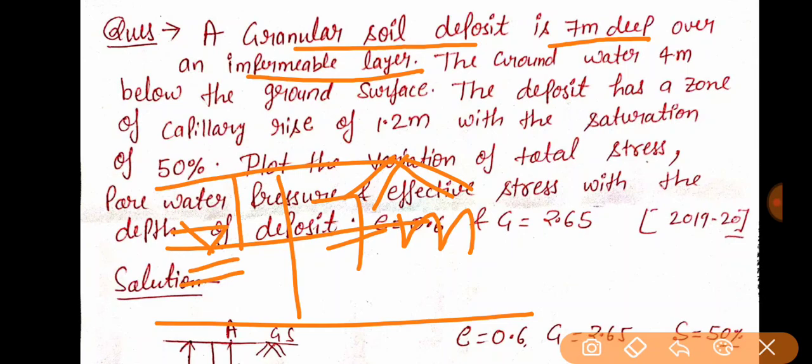Now, here is the question. This statement that I am going to say is very very important. Deposit has a zone of capillary rise of 1.2 meters. It is 1.2 meters capillary rise. Capillary rise is the water effect in the dry portion — there is a certain effect that comes from the dry portion.